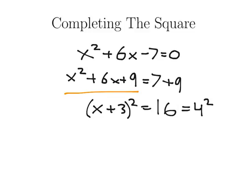Now I can take the square root of both sides. So I've got x plus 3. And on the right, the square root of 4 squared is really plus or minus 4. So now I have two solutions.